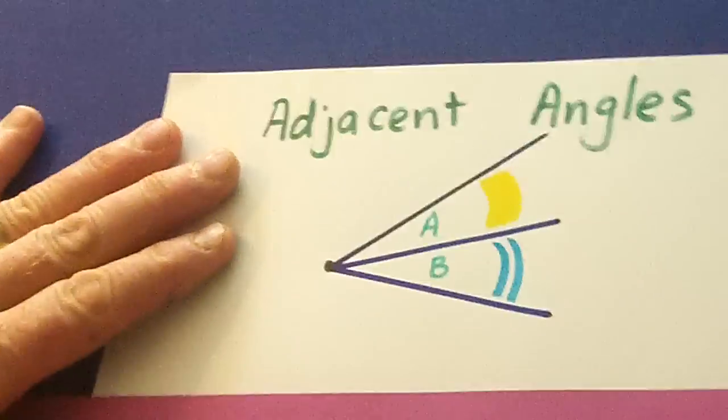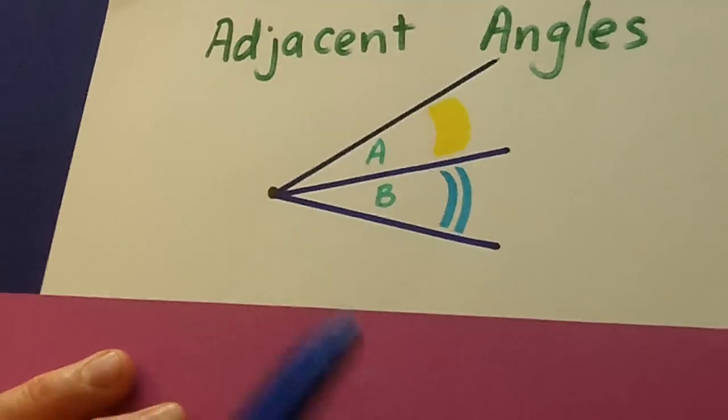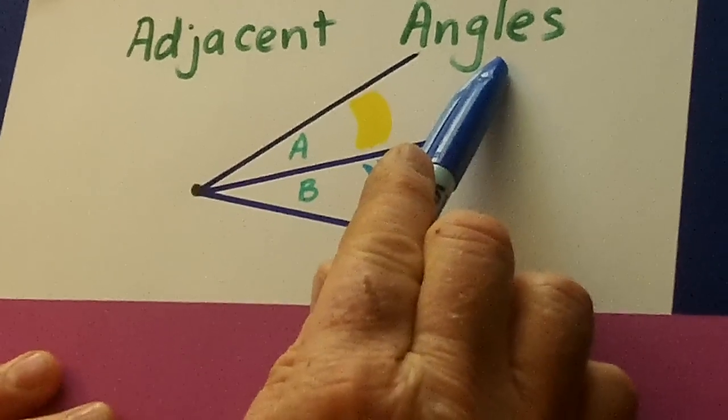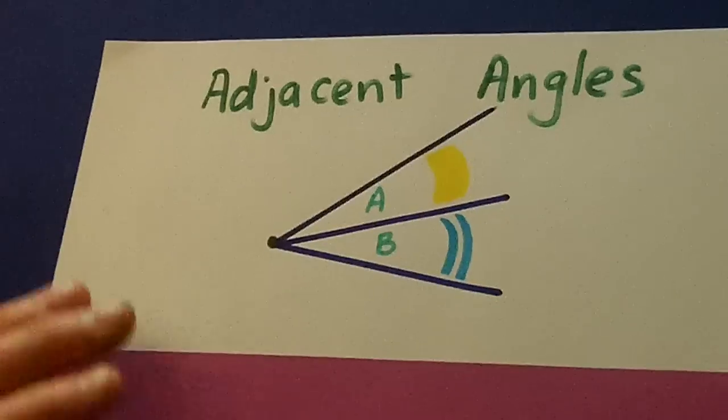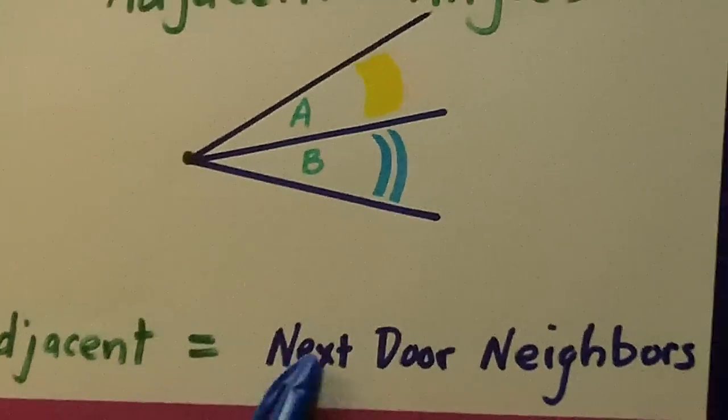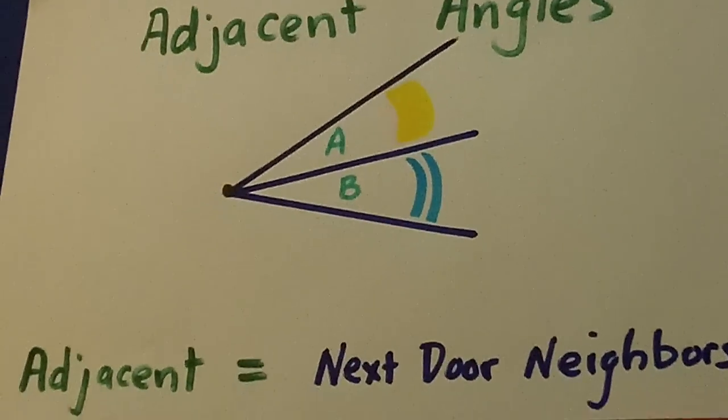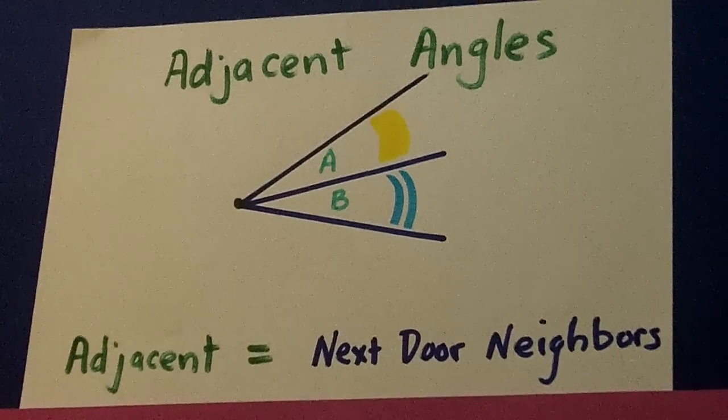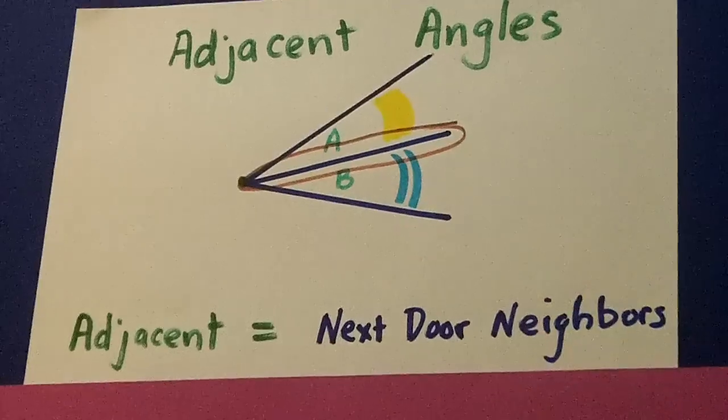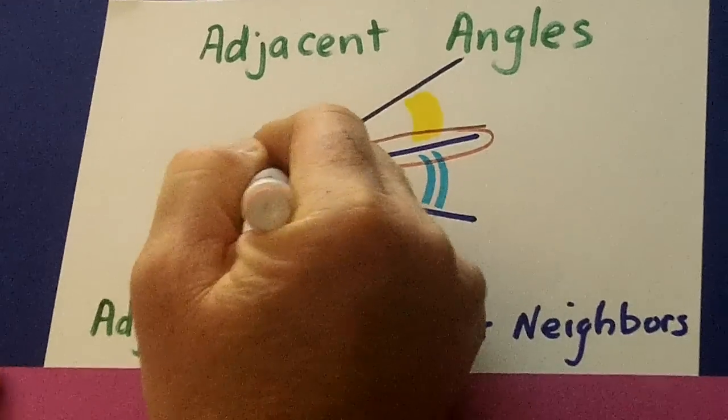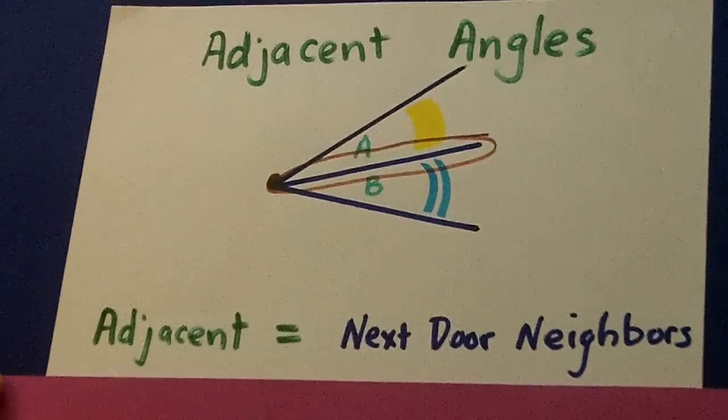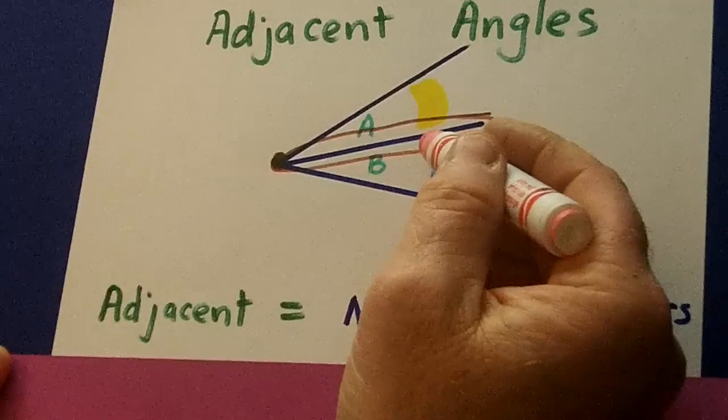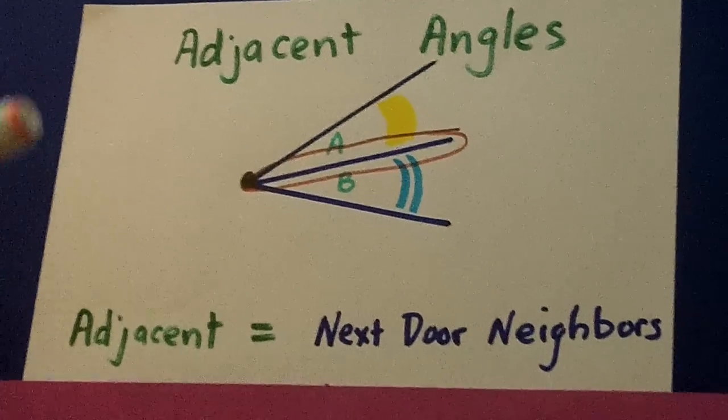Now, our next key types of angles are called adjacent angles. And all adjacent means is next door neighbors. So here we have angle A, angle B, and they share that one line together. And they also share that end point called a vertex. So A and B are adjacent angles.